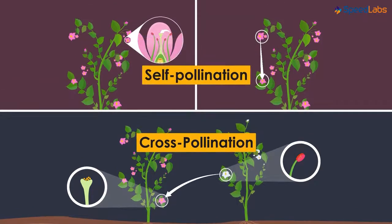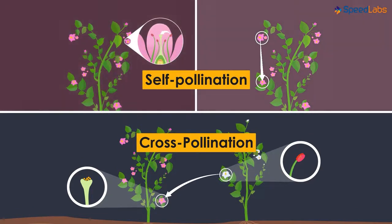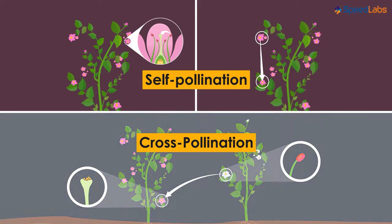So we have self-pollination which involves a single flower or different flowers of the same plant, and we also have cross-pollination that involves two flowers present on different plants.